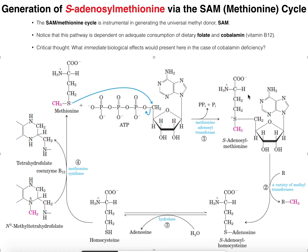Here is methionine, and methionine is going to have an adenosine group transferred to it. The sulfur of methionine is going to do a nucleophilic attack on the 5-prime carbon, and that's going to generate S-adenosylmethionine, catalyzed by the enzyme methionine adenosyl transferase. Notice that the three phosphates are going to get cut off as pyrophosphate and inorganic phosphate.